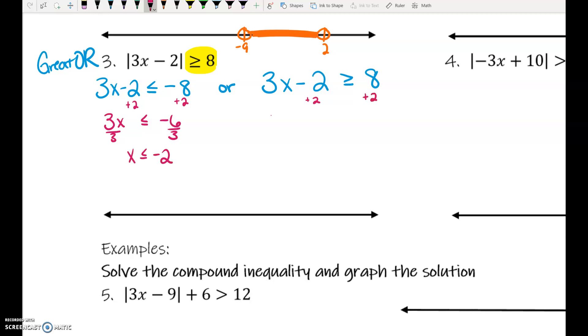3x minus 2 is less than or equal to negative 8. What is 10 thirds? 3.3 repeated? Yeah. And you can leave it as 10 thirds if you want to, but I know for putting it on the number line, 3.3 repeated might be easier.